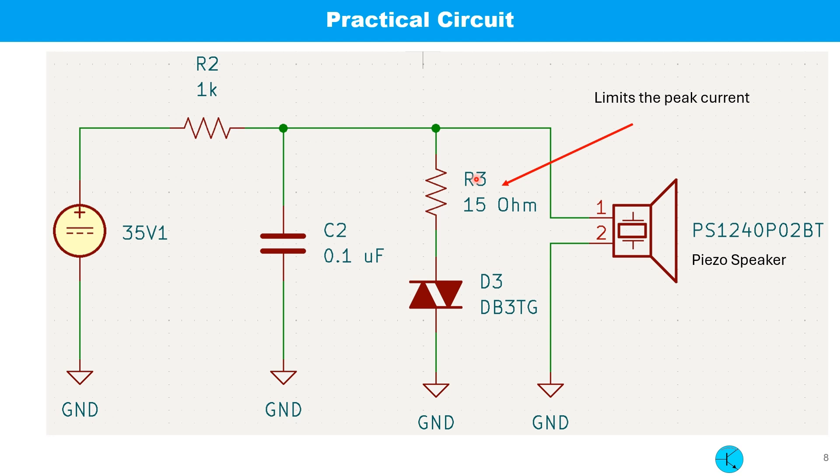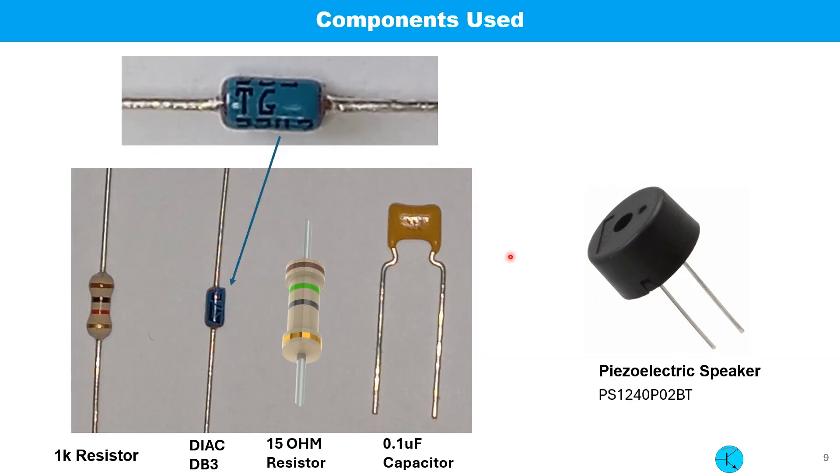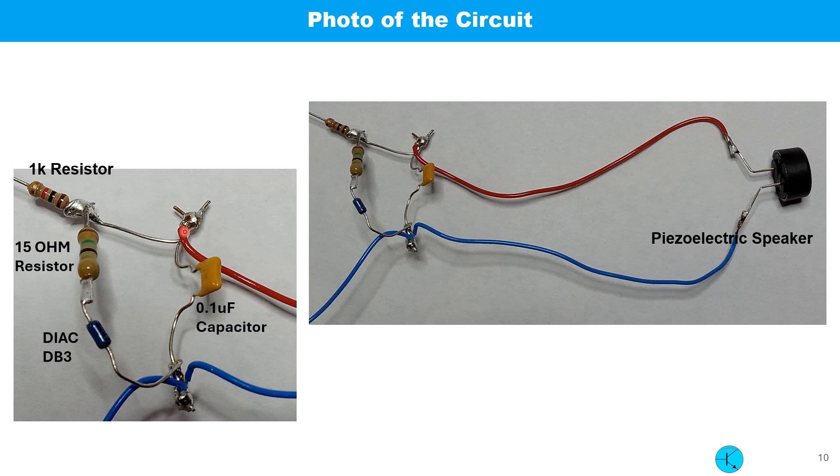This is the practical circuit diagram with some values. The 15 ohm resistor is used to limit the current below 2 amp so that the DIAC does not get damaged. The photo of the components are shown here. This is the photo of the complete circuit: 1K resistor, then 15 ohm resistor, then DIAC and the 0.1 microfarad capacitor. And across the capacitor, the PSO electric speaker is connected.